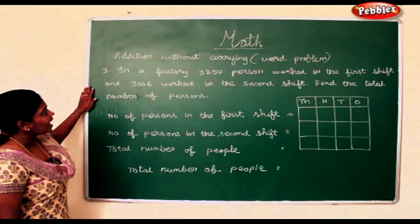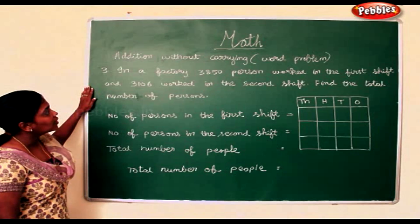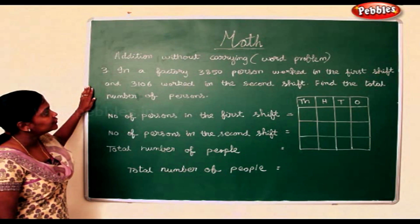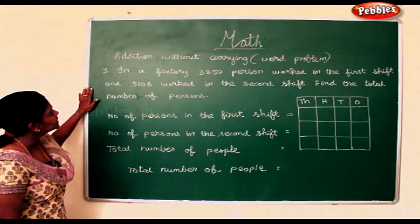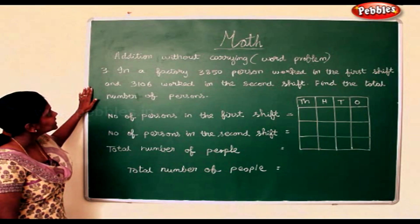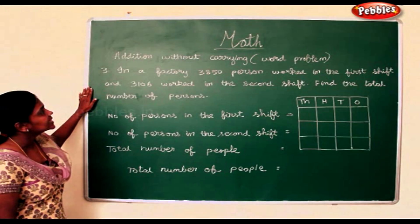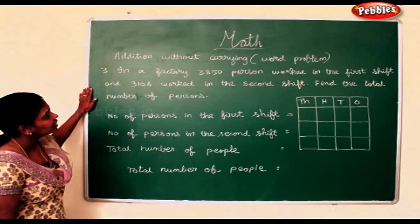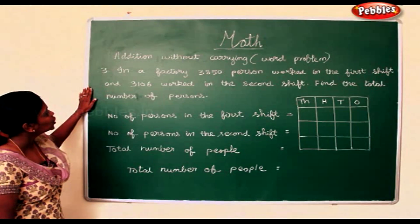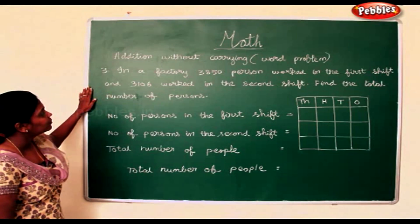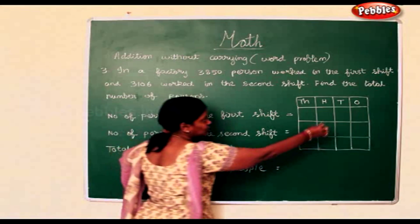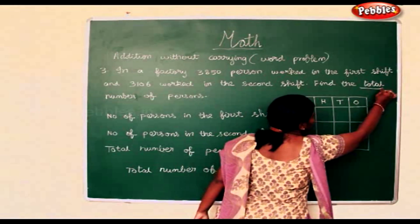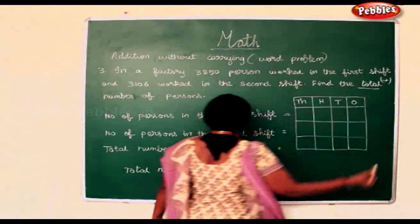In a factory, 3,850 persons worked in the first shift and 3,106 worked in the second shift. Find the total number of persons. Again, we have a total, so we will add.